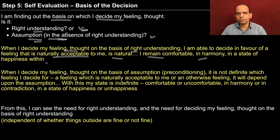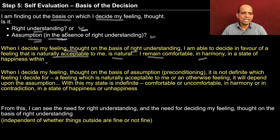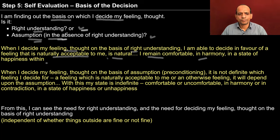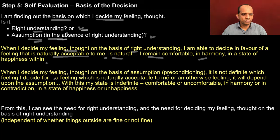If you remember, in step 4 we concluded that it is me who is responsible. Now we can see how: I am associating some meaning to the information I receive from outside, and that association might be either based on right understanding or some assumption — and that's how I am responsible. When I decide my feeling, my thought on the basis of assumption or preconditioning, it is not definite which feeling I decide for — a feeling naturally acceptable to me or otherwise — and my state becomes indefinite.